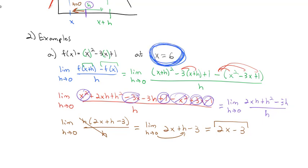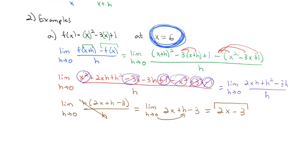We wanted the instantaneous rate of change at x = 6, so we plug into our formula: 2(6) − 3 = 12 − 3 = 9. The instantaneous rate of change of x² − 3x + 1 at x = 6 is 9 — the graph is growing at a rate of 9 units per unit of x.